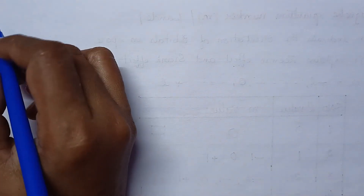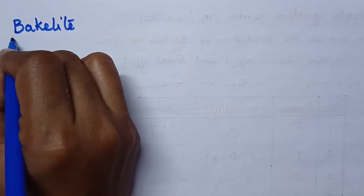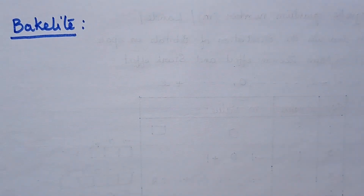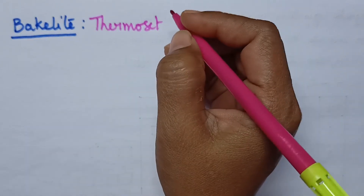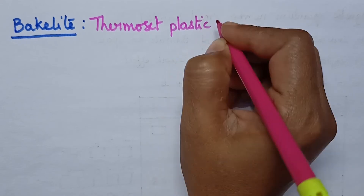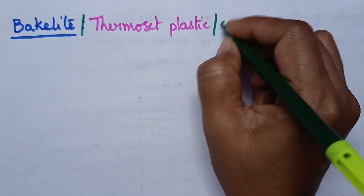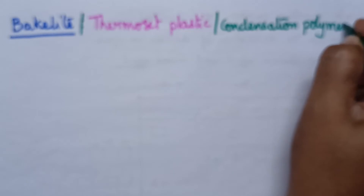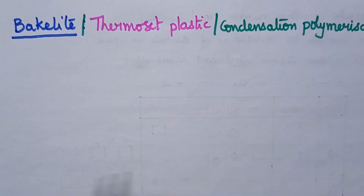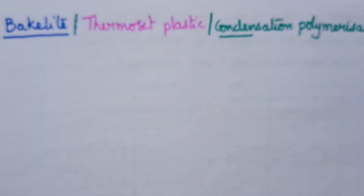Next, we will discuss about Bakelite. Bakelite is a good example of thermoset plastic. And hence, it can be prepared through condensation polymerization. Condensation polymerization involves a step mechanism.